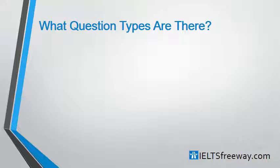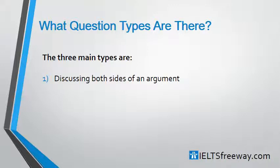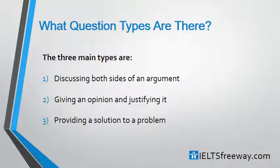What question types are there? The three main types of questions are: discussing both sides of an argument style questions, giving an opinion and then justifying it type questions, and then providing a solution to a problem type questions. These are the main types of essay questions you're going to see in your test. Occasionally there are some slight variations, but if you learn the structures shown today, you'll be able to apply them to any questions that are slightly different.